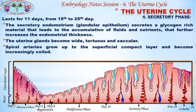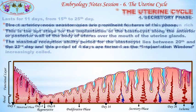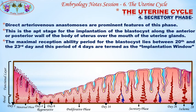The fourth is the secretory phase, lasting 11 days from the 15th to 25th day. The secretory endometrium or glandular epithelium secretes a glycogen-rich material that leads to the accumulation of fluids and nutrients, further increasing endometrial thickness. The uterine glands become wide, tortuous, and saccular. The spiral arteries grow up to the superficial compact layer and become increasingly coiled. Direct arteriovenous anastomoses are prominent features of this phase.